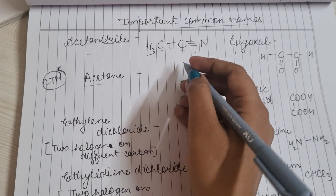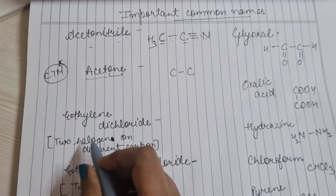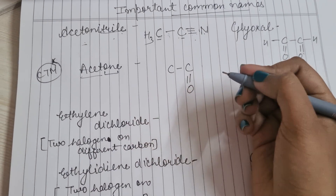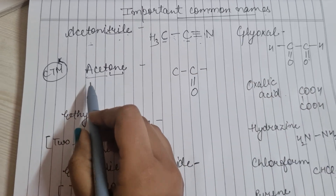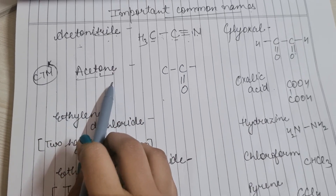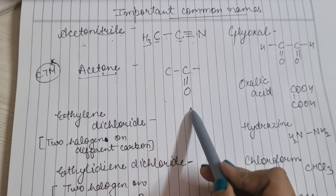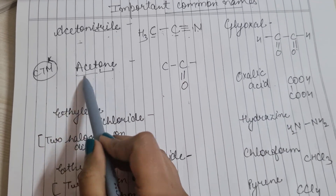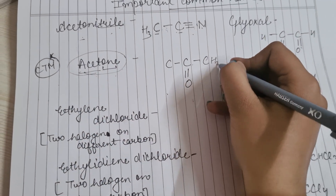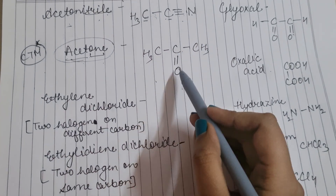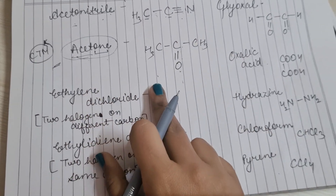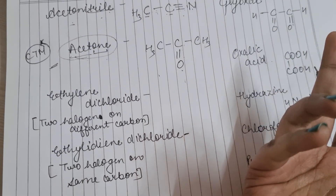Acetone: 'acet' मतलब 2 carbon, 'one' मतलब ketone। लेकिन यह एक exception है — इसका structure simply rule से नहीं बनता। Acetone का structure CH₃-C(=O)-CH₃ होता है — यह याद करना पड़ेगा। There are some exceptions, and acetone is one of them।